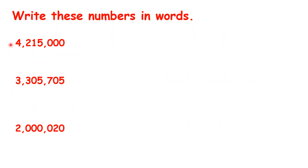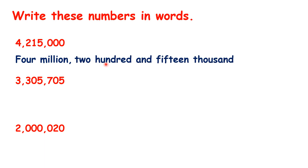Now let's see if we can write the numbers shown here in words. We have two commas in our number, so we know that this first digit will be millions, so we can write four million. Then we know that the second comma will separate thousands and hundreds, so we have two hundred and fifteen thousand. Then, because we don't have any hundreds, tens, or units, we don't need to write anything else. Our number is just four million, two hundred and fifteen thousand.